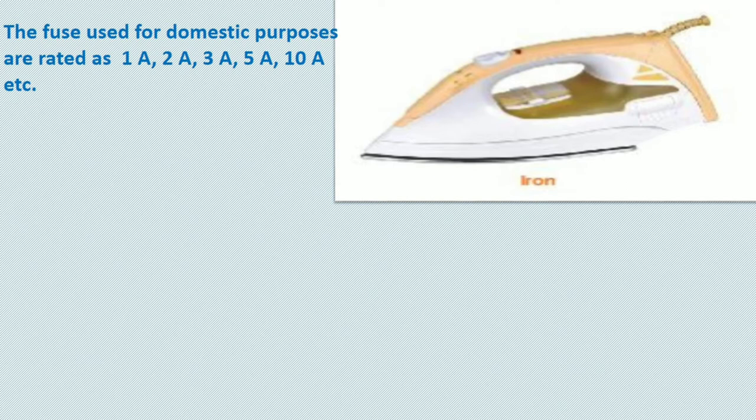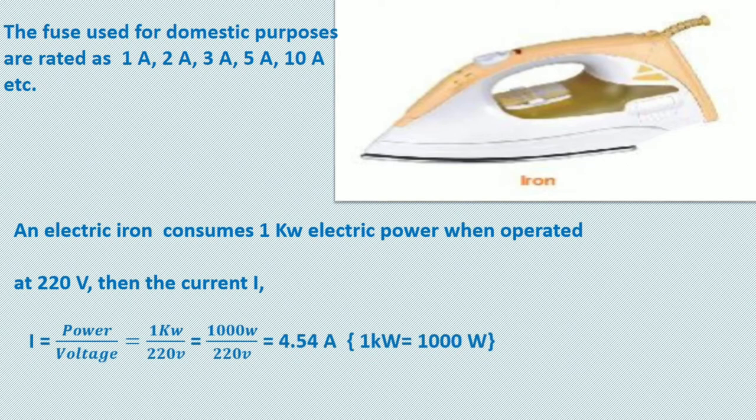For example, an electric iron which consumes 1 kilowatt electric power when operated at a potential difference of 220 volts, then the current I is given by power upon voltage. Substituting the values for power and voltage as 1 kilowatt and 220 volts, we obtain 4.54 ampere. Thus, a 5 ampere rated fuse must be used for this electric iron.